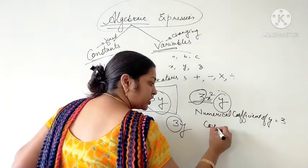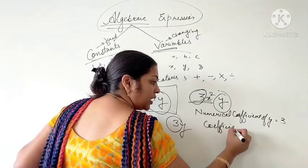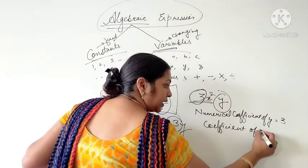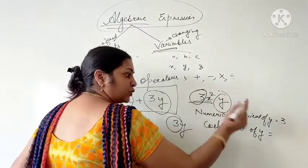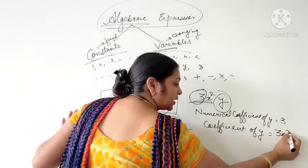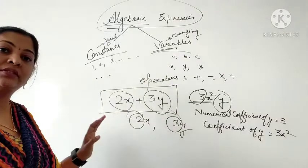And if only Coefficient is being asked from you, then hide Y. What is that? 3X square. 3X square is the Coefficient of this Term.